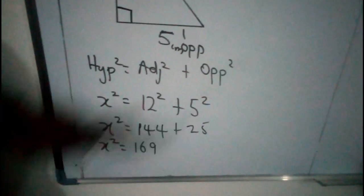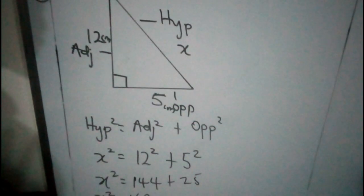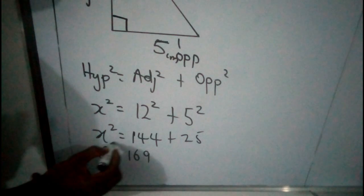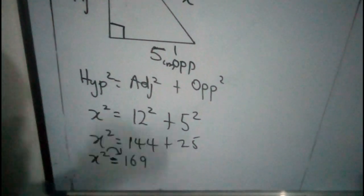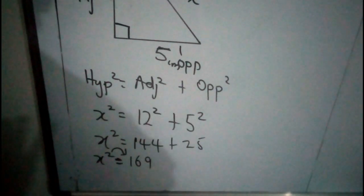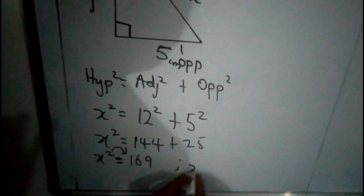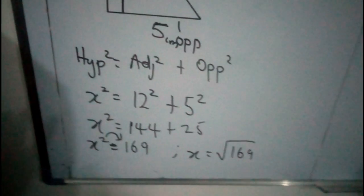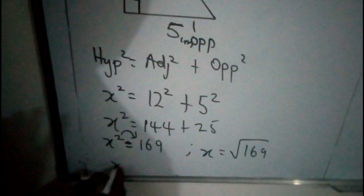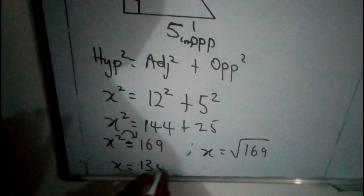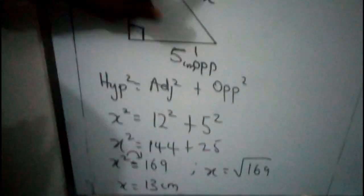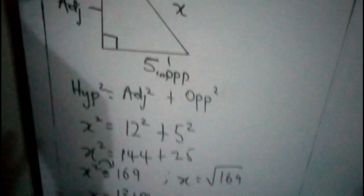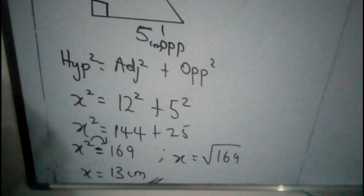But don't forget we are looking for X, which is the hypotenuse, not X squared. So we need to move the square away. Remember in our algebra — when the square crosses the bridge, which is the equals sign, it becomes the opposite, which is square root. So X now becomes the square root of 169. What is the square root of 169? That is 13 centimetres. So therefore, this side — the hypotenuse for this right-angled triangle — is 13 centimetres.